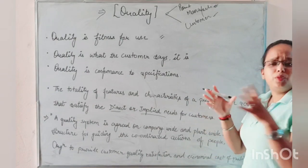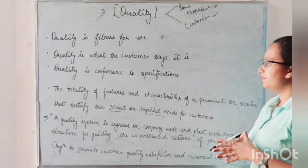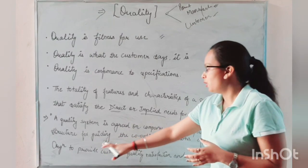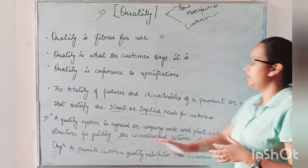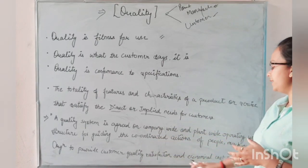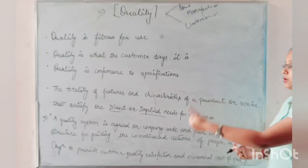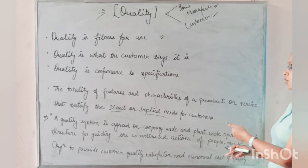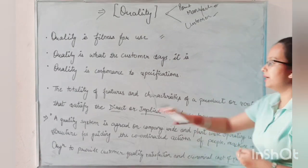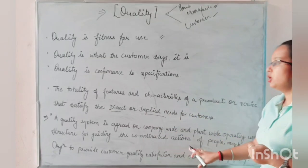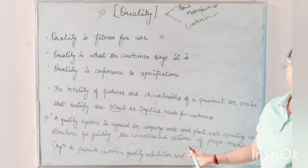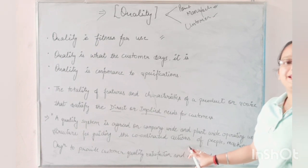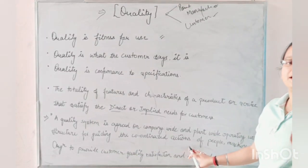So what is the definition of a quality system? It is an agreed-upon company-wide and plant-wide operating work structure for guiding and coordinating the action of people and machines in the organization to provide customer quality satisfaction and economical cost of quality. It means that any quality system — at company level or plant level — is called quality oriented when it operates a structure of guiding and coordinating all systems.